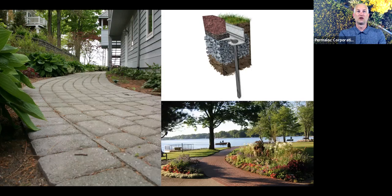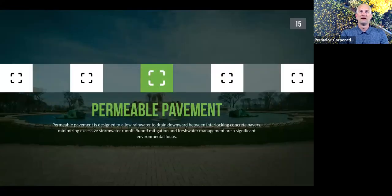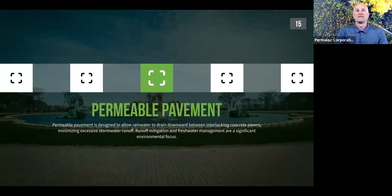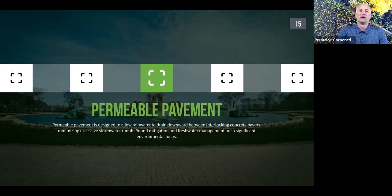Next is permeable pavers — very similar on the surface but fundamentally quite different underneath. Permeable pavers are important for green building applications because they allow water to pass through them and return to the ground instead of running off into the drainage system, which can cause combined sewer overflows and other negative environmental impacts. The abundance of stormwater is managed because it runs down through the pavers and into the ground plane.